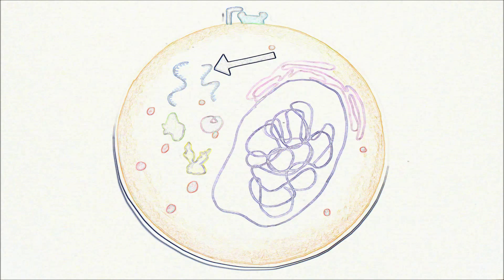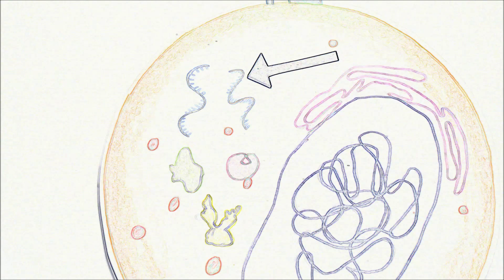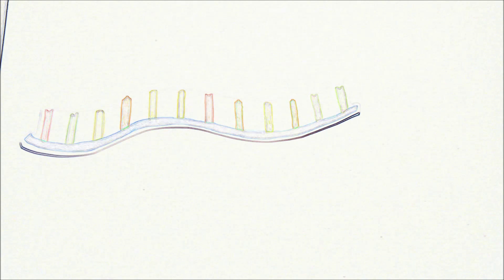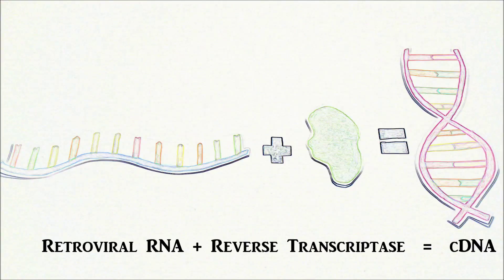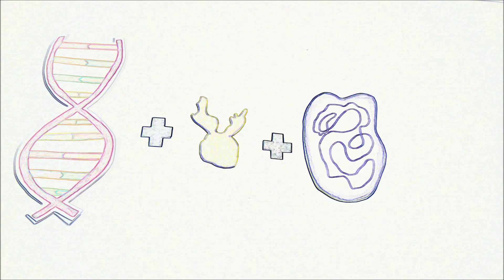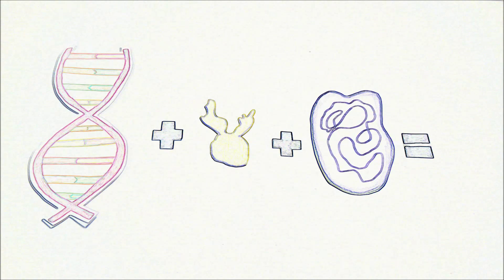The genetic material of the HIV retrovirus is RNA, so it must be converted to double-stranded, complementary DNA by reverse transcriptase in order to be integrated into the host cell's DNA by the enzyme integrase.